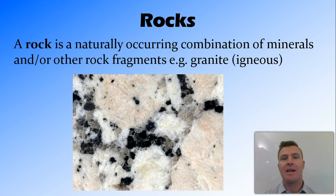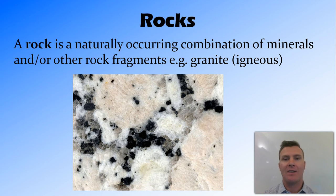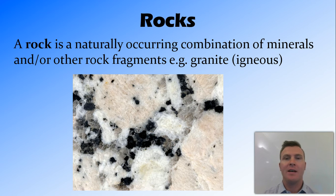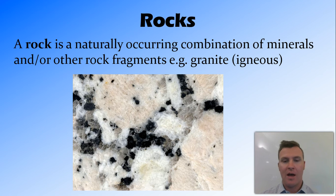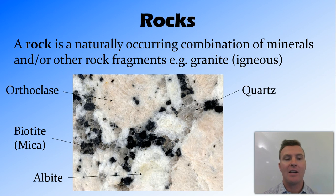Rocks, on the other hand, do not have a specific chemical composition or a specific shape. They're basically defined by the minerals found inside them, or the other rock fragments found inside them, depending on the type of rock. For example, granite is a group of rocks that generally contain orthoclase, quartz, and albite — those two types of feldspar and quartz.